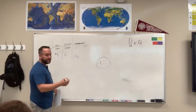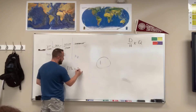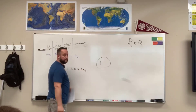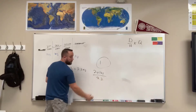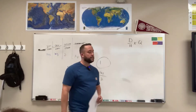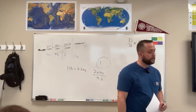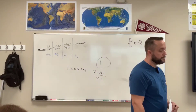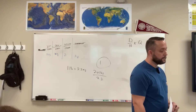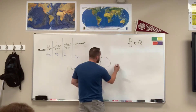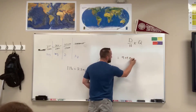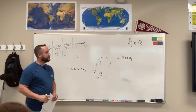For every one pound there are 2.2 kilograms — well, it's the other way: you divide by 2.2. So you take 20 pounds and divide it by 2.2. Twenty divided by 2.2 gives us 9.09 kilograms. That's our first piece of information.